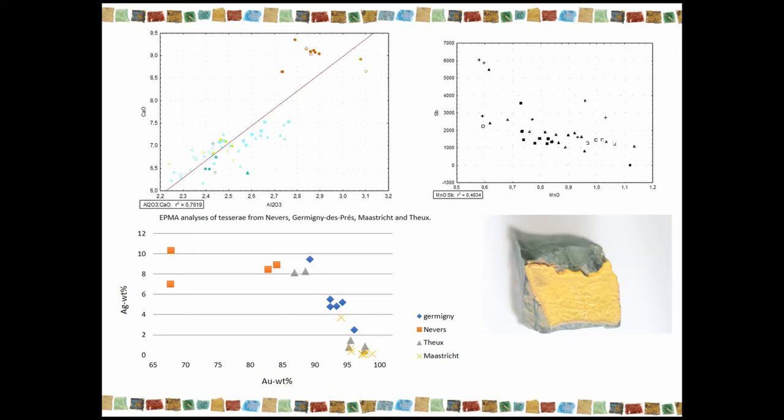So, for the gold-foiled tesserae, if we consider the different part of the glass, we are going to see that we've got different clusters. The one of Nevers is clearly different. Then we can distinguish the production of Germigny-des-Prés with the gold foil. And if we look at the composition of the cartellina, we are going to see that some cartellina are made with very uncolored glass, and some are not. So, finally, we've got a very distinct group for the gold-foiled tesserae.